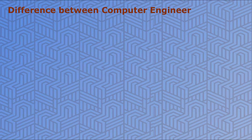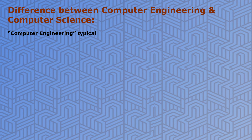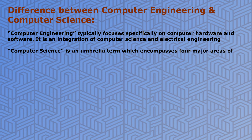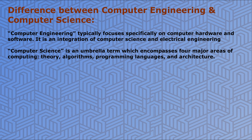Computer Engineering specifically focuses on computer hardware and computer software. It is an amalgamation — a mixture of computer science and electrical engineering. Computer Science Engineering, on the other hand, is an umbrella term which encompasses four major areas of computing: the first is theory, the second is algorithms, the third is programming languages, and last but not the least, architecture.